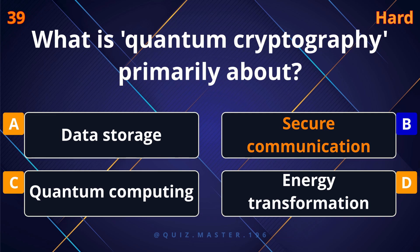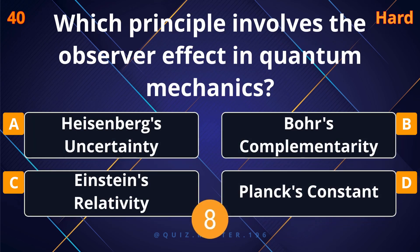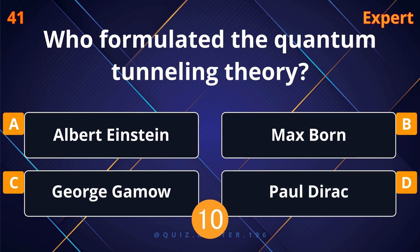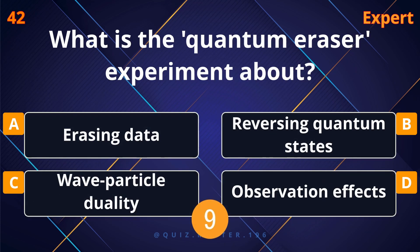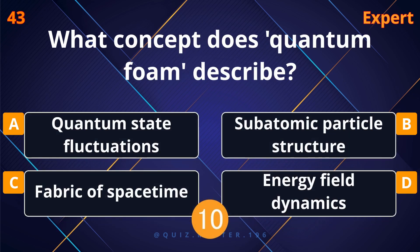What is quantum cryptography primarily about? Secure communication. Which principle involves the observer effect in quantum mechanics? Heisenberg's uncertainty. Who formulated the quantum tunneling theory? Observation on quantum field.